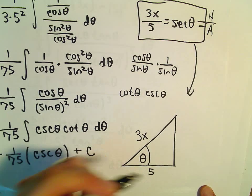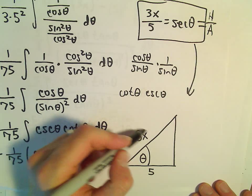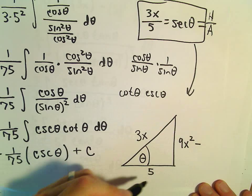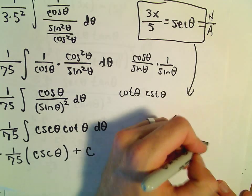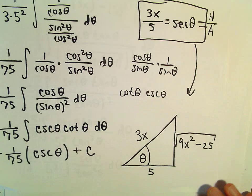Cosine is adjacent over hypotenuse. So this will be hypotenuse over adjacent. So the hypotenuse has length 3x. The adjacent is length 5. If we do Pythagorean theorem, we'll get 3x quantity squared, which will give us 9x squared. We'll have to subtract away the 5 squared or 25. And then we'll take the square root of that to get our missing side.